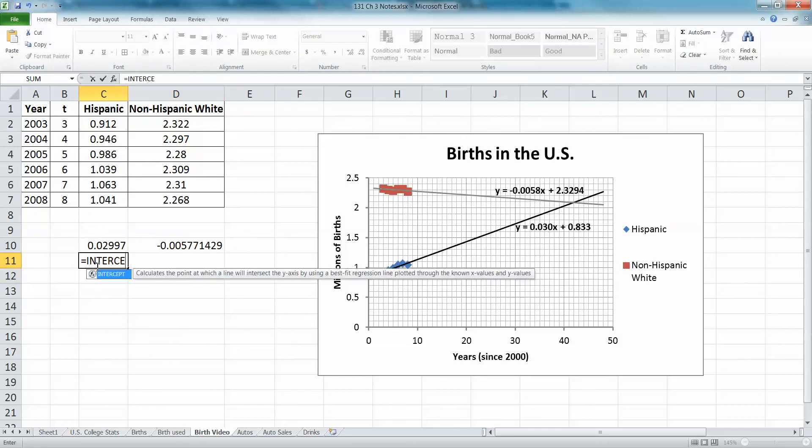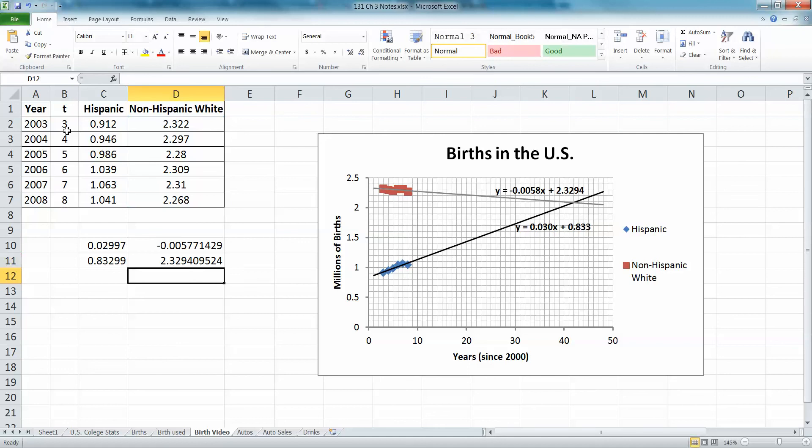And the intercept, remember we learned how to do it before, but I'll say it again. Intercept is y's comma x's, enter. And then equals intercept, oopsie, y's comma x's. Done, okay.